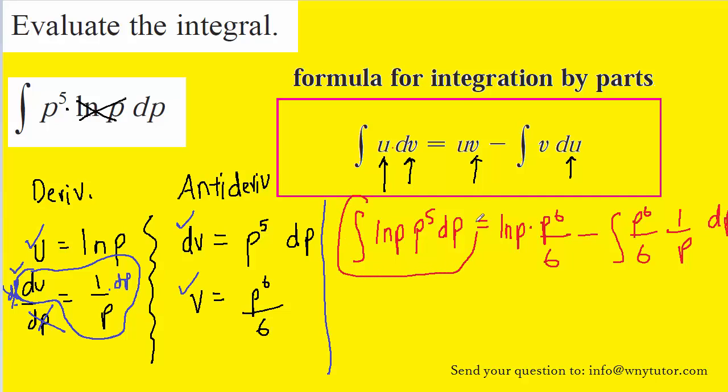You'll notice that this part is simply the original integral that we were trying to evaluate. It just so happens that the terms are switched in order. We have the natural log of p times p to the fifth, as opposed to the original, which was p to the fifth times the natural log of p. But those are, of course, the same expression. What we need to do is clean up this term right here and then finish evaluating the integral on this side.